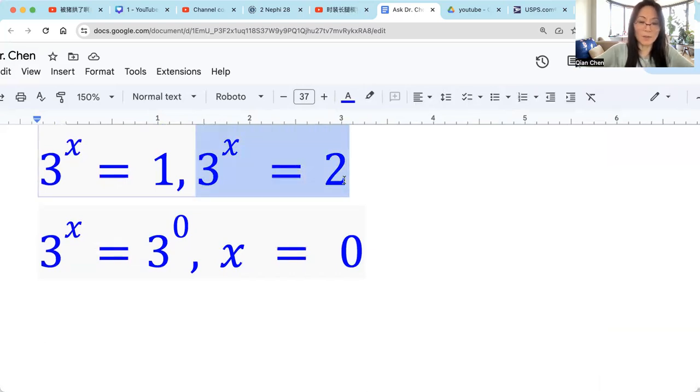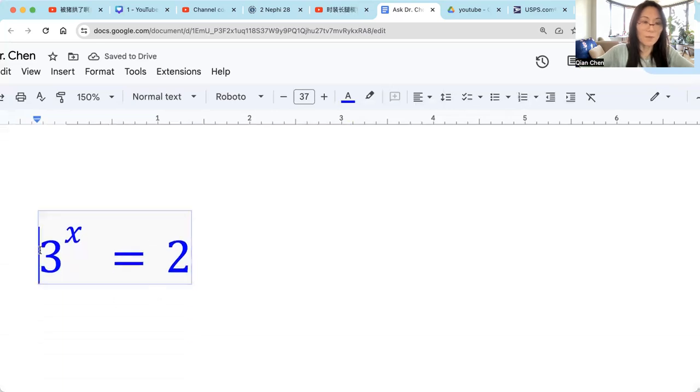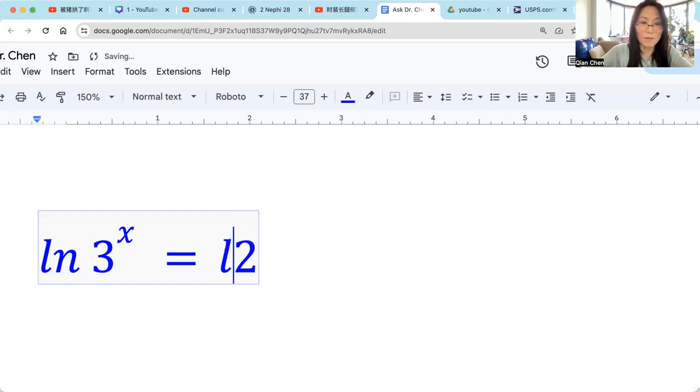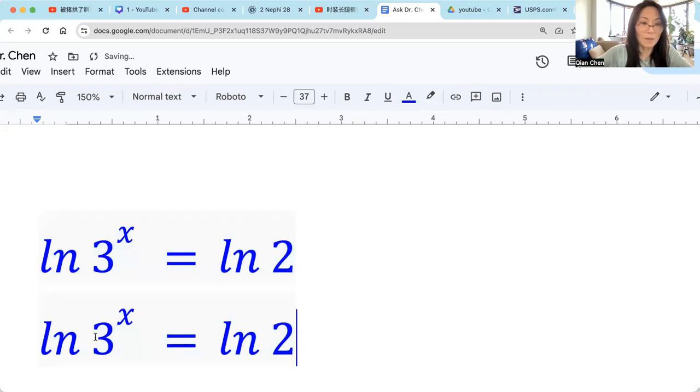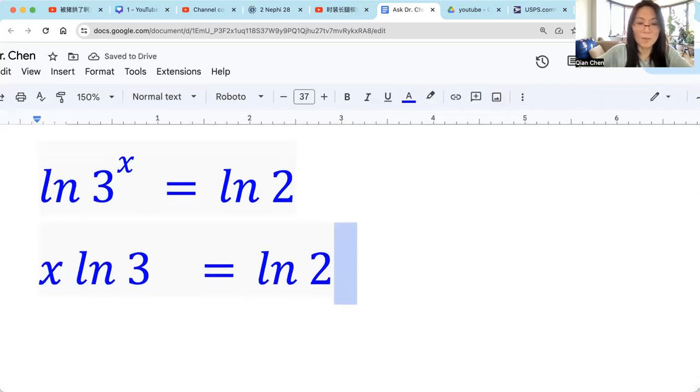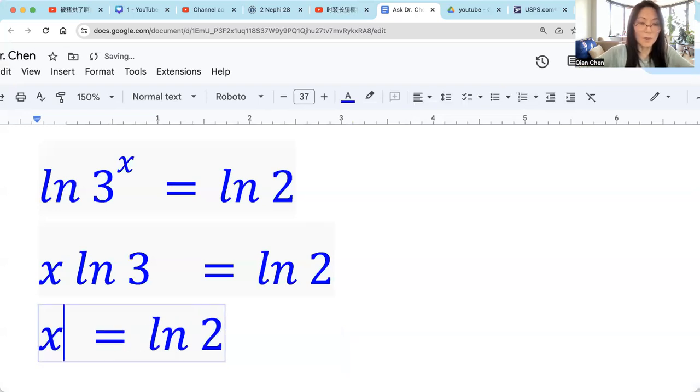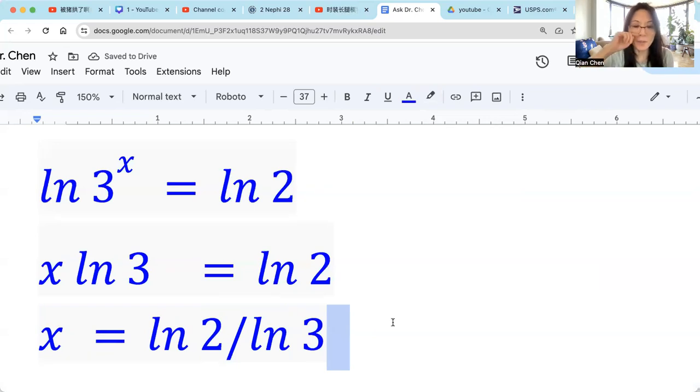The second solution comes from 3 raised by x equals to 2. So we need to use logarithmic to solve this. So we take ln on both sides. By the property of logarithmic, the exponent of x can be pulled to in front of ln3. Now we divide by ln3 on both sides. We get x equals to ln2 divided by ln3. Well ln2 is an irrational number. ln3 is an irrational number. Irrational number divided by irrational number is an irrational number. And we can approximate by punching to calculate it. But we would rather leave it in this form. So the second solution is x equals to ln2 divided by ln3.